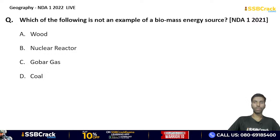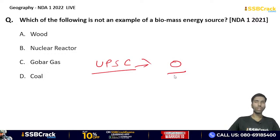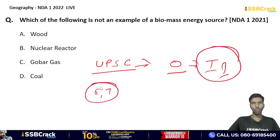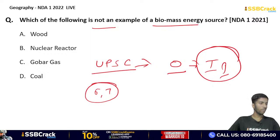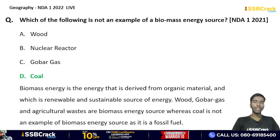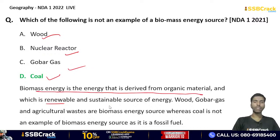Which one of the following is NOT an example of a biomass energy source? Wood, nuclear reactor, cow dung gas, or coal? This question appeared in NDA last year. The correct answer is option D — coal. Coal is a fossil fuel, not a biomass energy source. Biomass energy is energy derived from organic material and is a renewable and sustainable source of energy.